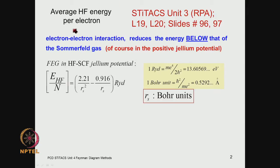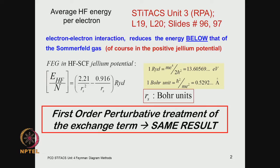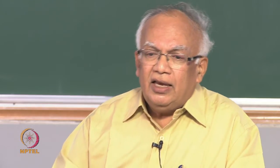The average Hartree-Fock energy per electron, where N is the number of electrons, is given by a result discussed in the previous unit. We also discussed that if you obtain this result using first-order perturbation theory rather than the self-consistent field methodology of the Hartree-Fock scheme, you get essentially the same result, as discussed in lectures 19 and 20.